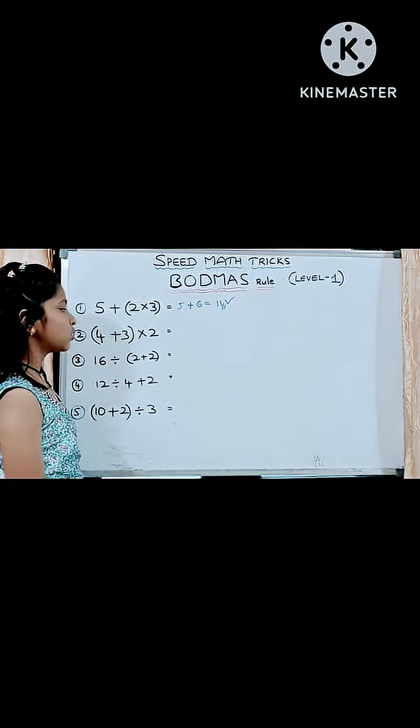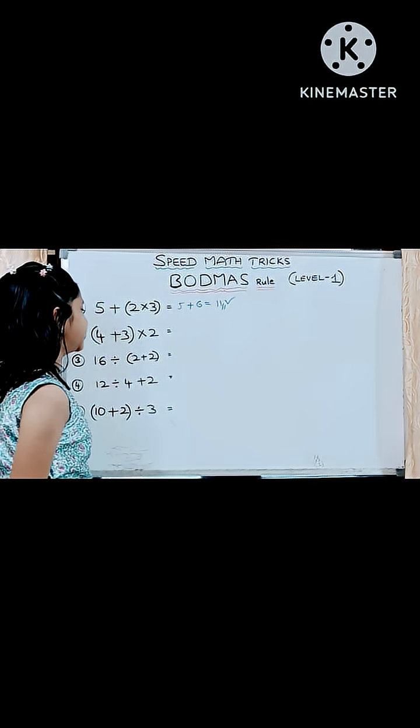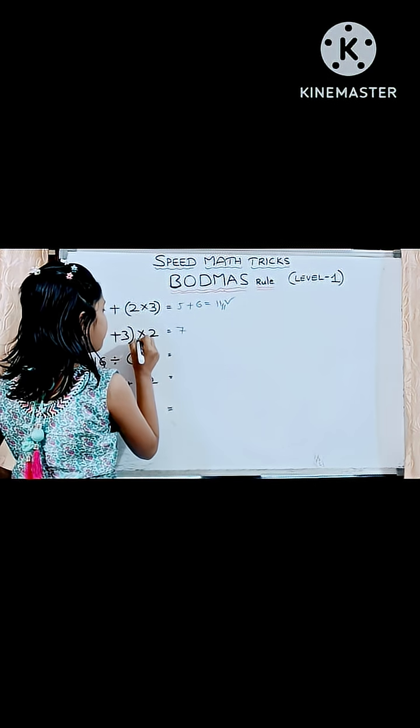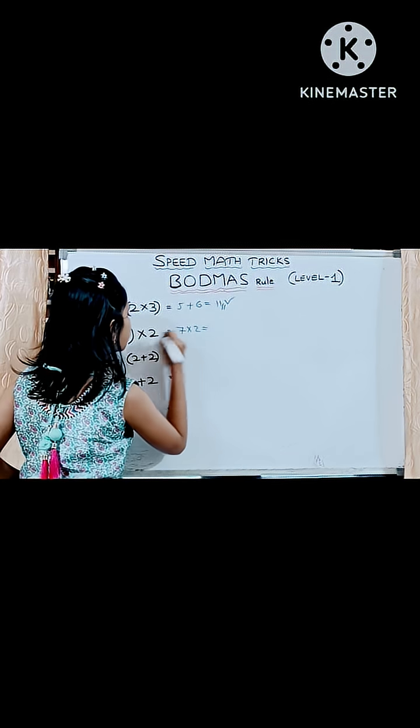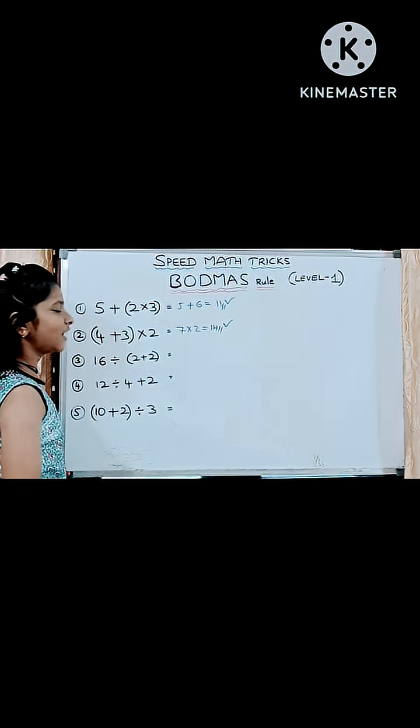In this second question also, first bracket simplification, that multiplication. 4 plus 3 is 7 into 2 is equals to 14. That's all.